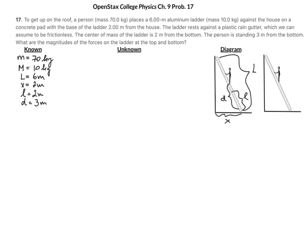We're looking for the magnitudes of the forces on the ladder at the bottom and top, so I will call those F-bottom and F-top. Before we continue, we have to realize that there will be forces acting in this scenario that are vertical, and some that are horizontal. So we have to determine our x and y directions — I'll set x to the right and y upward.